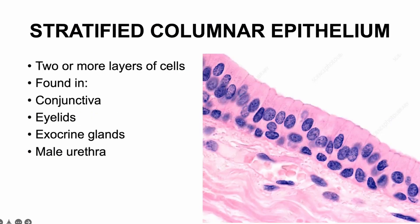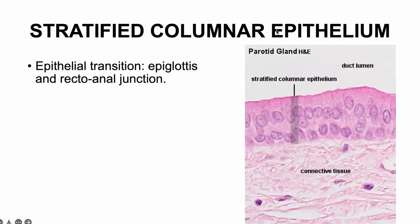It's easy to remember where you find stratified columnar epithelium. The recto-anal junction is basically where the epithelium changes. Think about it: your entire gastrointestinal tract is lined by simple columnar epithelium — one layer of cells with microvilli for easy absorption of nutrients. By the time you reach the rectum and anus, you don't need a simple cell layer anymore. It becomes thicker — stratified columnar epithelium. And by the time you reach outside the anus, it becomes stratified squamous keratinized epithelium, because it's outside now for protection.